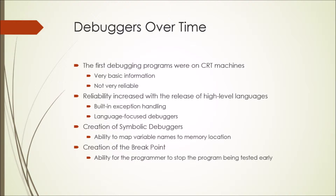Over time, there was the creation of something called the symbolic debugger, which is able to map variable names to memory locations. This allowed it to be easier for the programmer to know exactly what the debugger was telling them — before, they would only be given the memory location of the variable that had the problem, and that doesn't really help too much. Eventually, the breakpoint was created, which was one of the biggest steps forward in debugging. The breakpoint allows the programmer to set a point where the program stops early, and that really helps in finding where future problems could be.